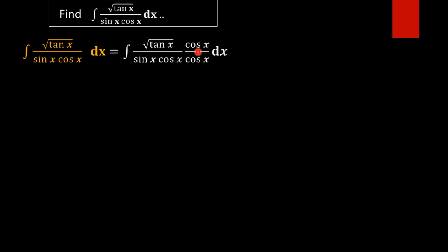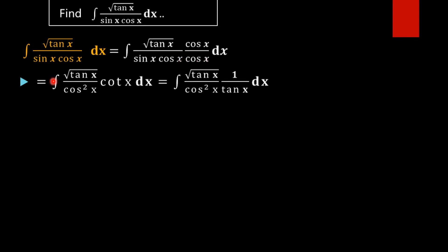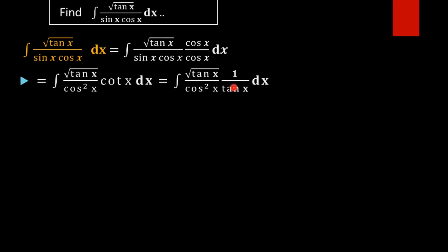Now note that cos x divided by sin x gives cot x, and cos x into cos x gives cos²x. We are simplifying: cos x by sin x gives cot x, and cos x into cos x gives cos²x. Note that cot x equals 1 by tan x. In the next step we can cancel tan x and root tan x.